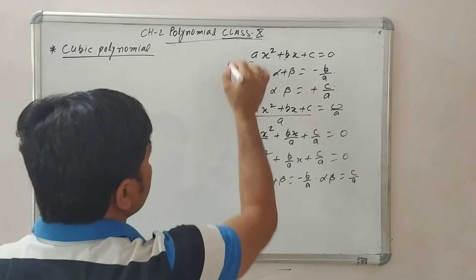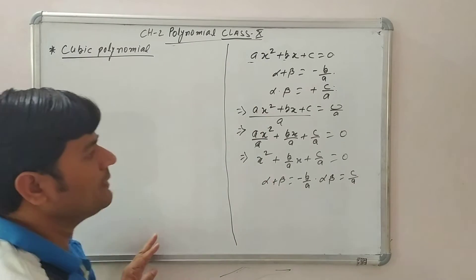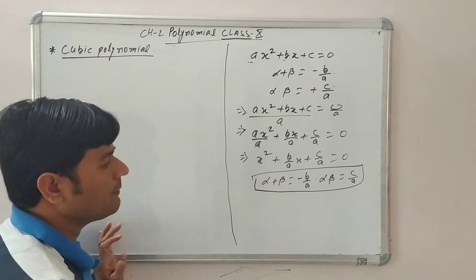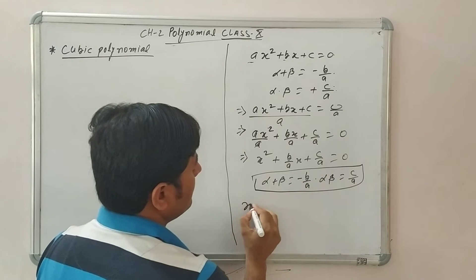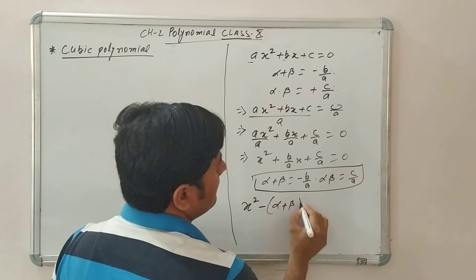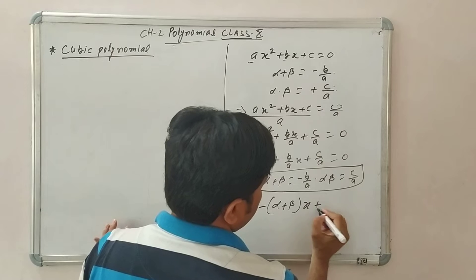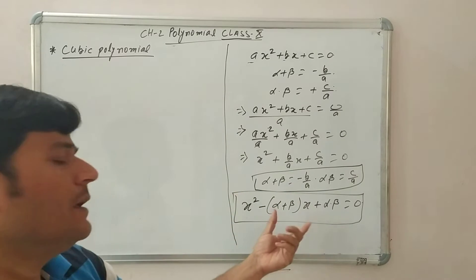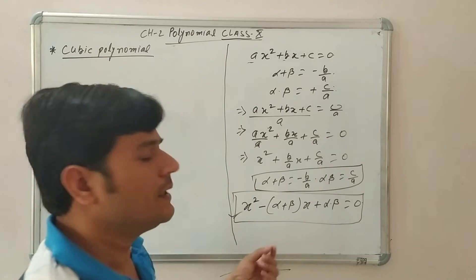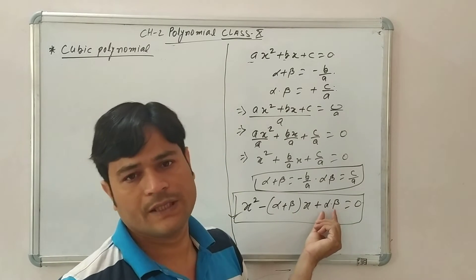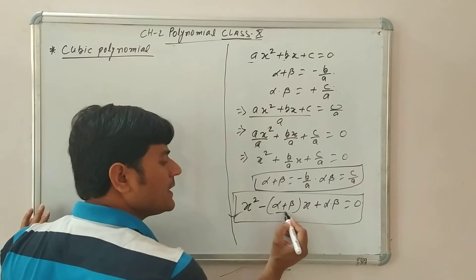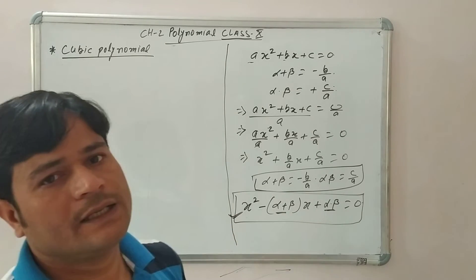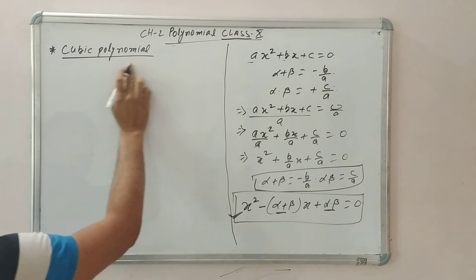Also, if alpha plus beta and alpha into beta are given, you can write the quadratic equation as x² − (alpha + beta)x + (alpha × beta) = 0. अगर आपको quadratic equation लिखने के लिए बोला जाए, तो आपको alpha plus beta और alpha into beta चाहिए — और आप quadratic polynomial लिख सकते हैं।